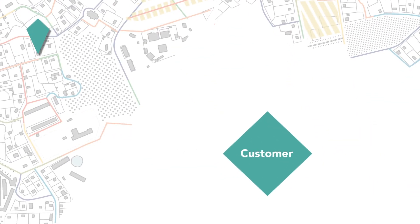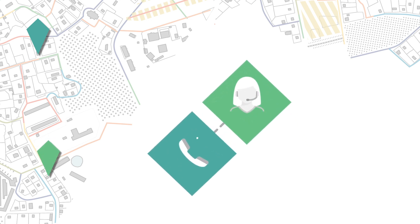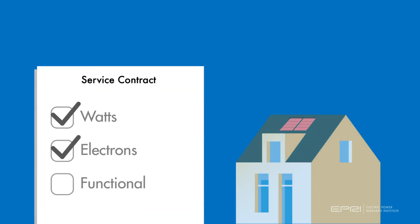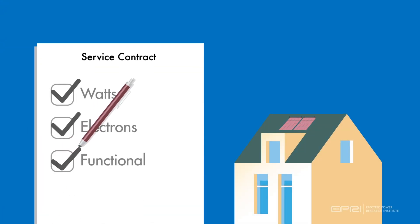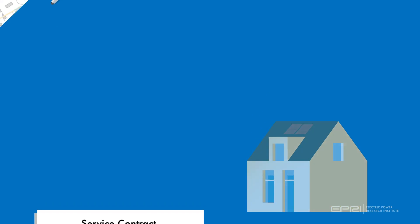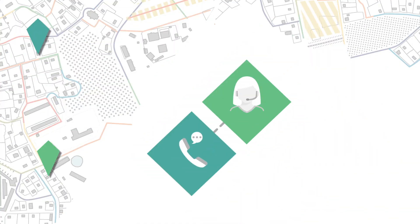A customer wants to sign up for a utility solar program and contacts their utility. A field crew is dispatched to inspect the DER installation, ensure the required safety equipment is installed, and connect it to the grid.